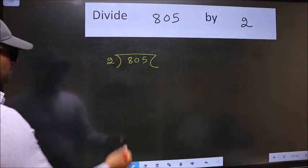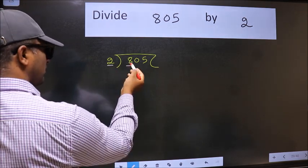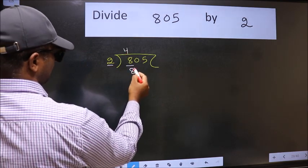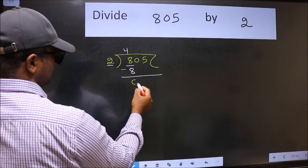Next. Here we have 8 and here 2. When do we get 8 in the 2 table? 2 fours are 8. Now we should subtract. We get 0.